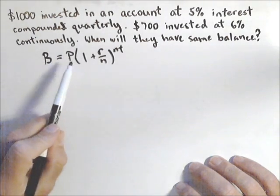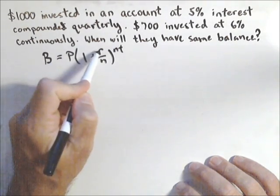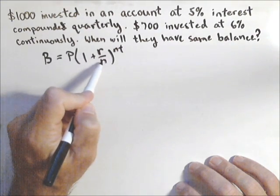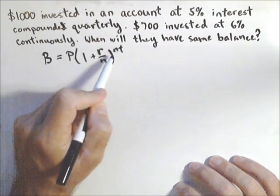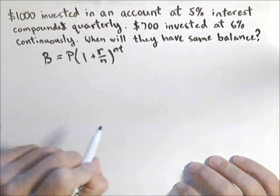B is balance. P is principal. R is the rate as a decimal. N is the number of compounding periods, so we use that twice. And T is the number of years.